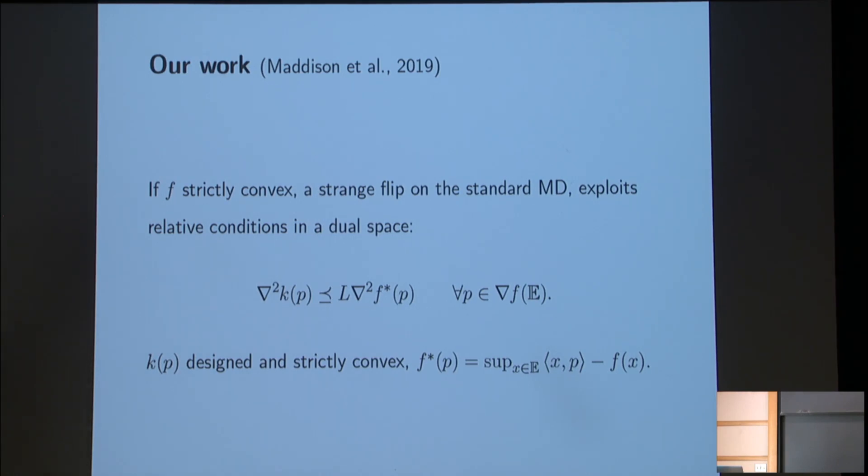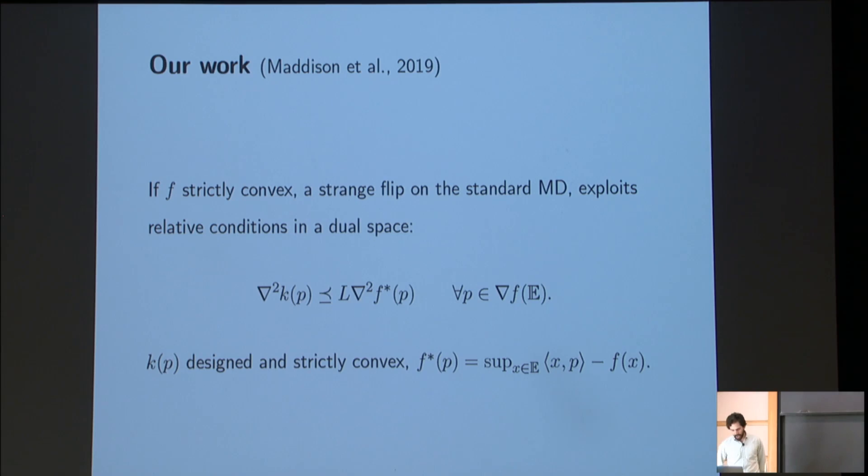This is where I can sort of slot in my part of the story. We realize that if F is strictly convex, then if you do this strange little flip on the mirror descent algorithm, you can exploit different relative conditions in a dual space, now between a designed reference function k and the convex conjugate of the function that you were interested in optimizing. Those conditions are pretty opaque. So actually, if you rewrite the equivalent conditions in the primal space, you get this kind of thing. And these are the conditions that we studied. And the essence of these conditions is that they relate the growth of the derivatives of second order to those of the first order through this function k.